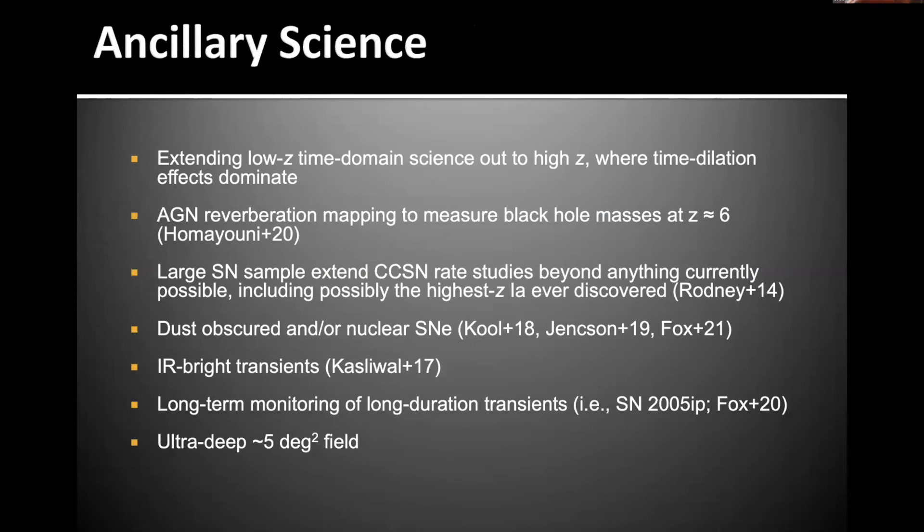But wait, there's more. Ancillary science, we really should have called it ancillary because this is also a really strong driver for such a survey. By going deep and out to longer wavelengths, you're able to extend low-Z time domain science out to high-Z where time dilation effects dominate. That includes things like AGN reverberation mapping to measure black hole masses at redshift of six. Large supernova sample can extend core-collapsed supernova rate studies beyond anything we currently have possible, maybe even detect the highest Z1a ever.